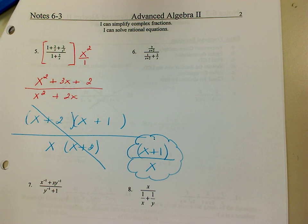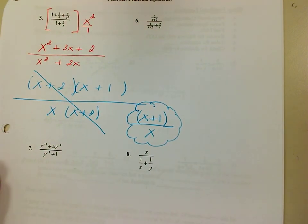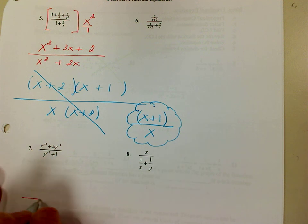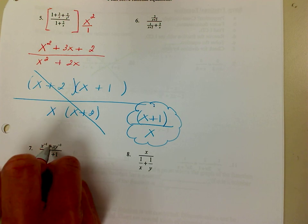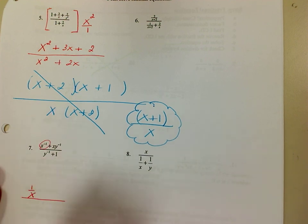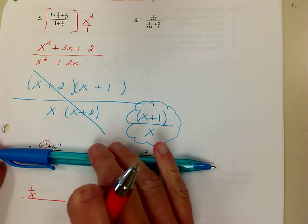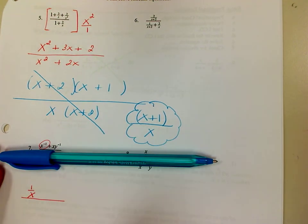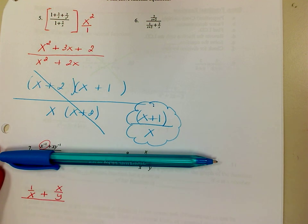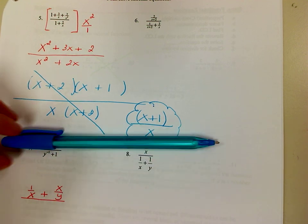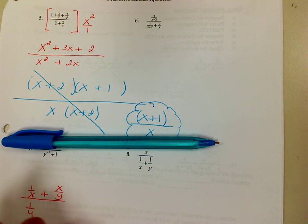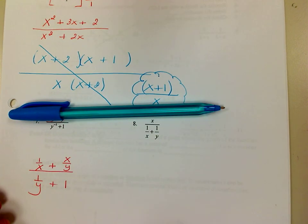I'll do number 6 last. I'm going to do number 7 next. The first thing I want to do is change my negative exponents to positive exponents. So x to the negative 1 becomes 1 over x. Working in the numerator: that becomes 1 over x plus x over y, since only the y has a negative exponent. Moving to the denominator: that becomes 1 over y plus 1. Now it looks like number 5.